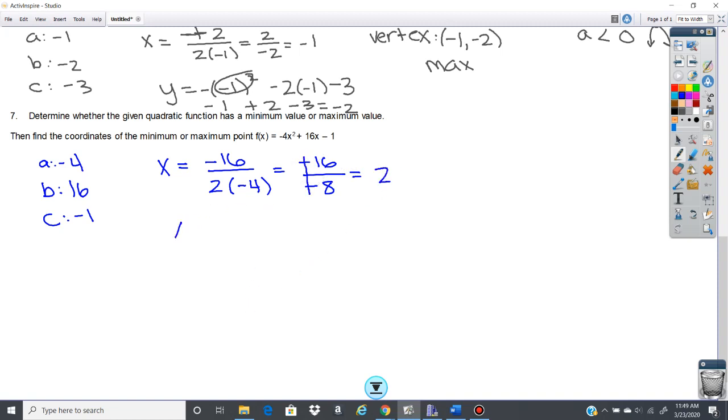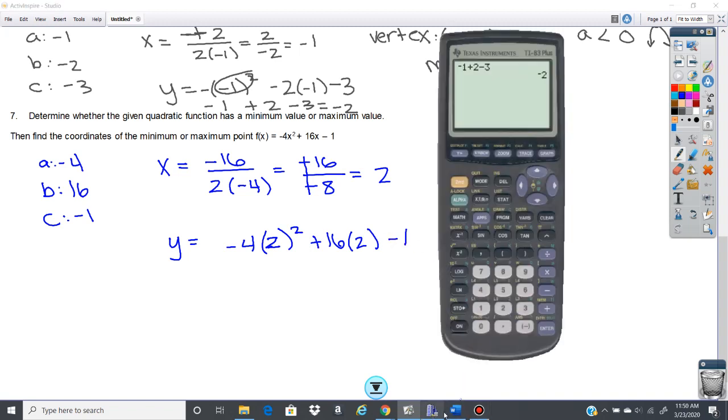Then we're going to plug that back in. So y equals -4 times 2² plus 16 times 2 minus 1. So I'm just going to go ahead and put this in like that. So I've got -4 times 2² plus 16 times 2 minus 1. So 15.